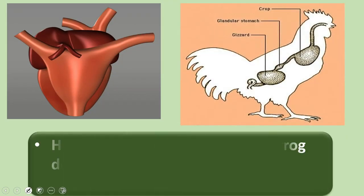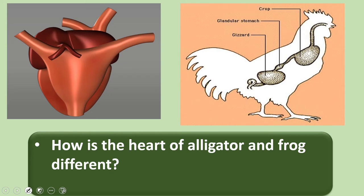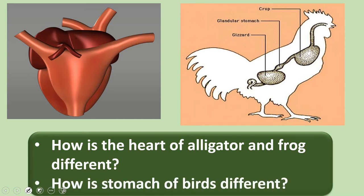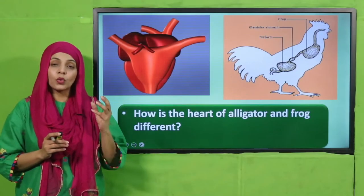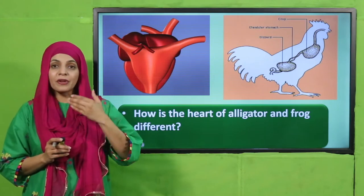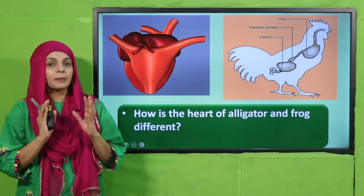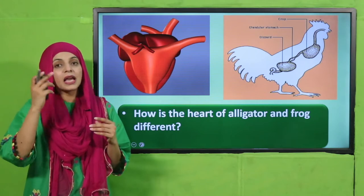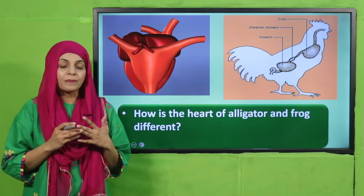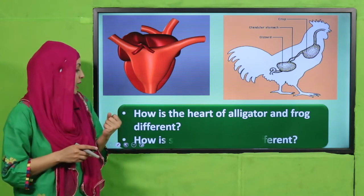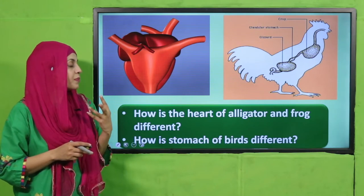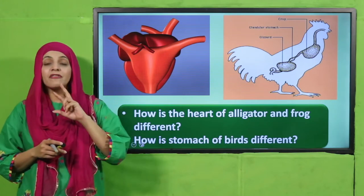Listen to the question carefully and then answer: How is the heart of an alligator and a frog different? The frog's heart has no separation, while in the alligator's heart a slight separation has started. This is the difference between the heart of a frog and an alligator. Now, how is the stomach of birds different? They have two stomachs.